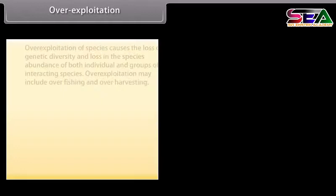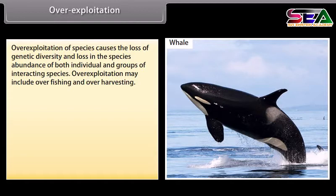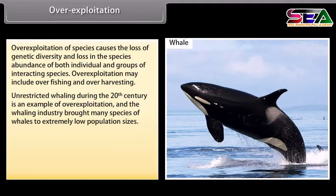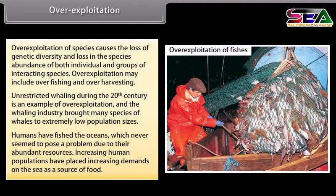Over-exploitation of species causes loss of genetic diversity and loss in species abundance of both individual and groups of interacting species. Over-exploitation may include over-fishing and over-harvesting. Unrestricted whaling during the 20th century is an example of over-exploitation that brought many whale species to extremely low population sizes. Increasing human populations have placed increasing demands on the sea as a source of food.